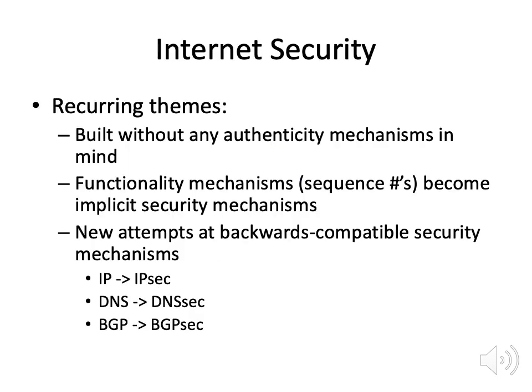This caps off our section on internet security. The recurring themes are that many protocols were built without any authenticity mechanism in mind — such as IP, TCP, DNS, and BGP. Functionality mechanisms like sequence numbers or offset numbers become implicit security mechanisms that people assume are not guessable — port numbers, IP IDs — and assume that packets can't be spoofed because these numbers are hard to guess. When it turns out they can be guessed, everything breaks. So people have started building backward-compatible security mechanisms: for IP there's IPsec, which adds encryption and message authentication codes; for DNS we have DNSSEC; and for BGP there's BGPsec.